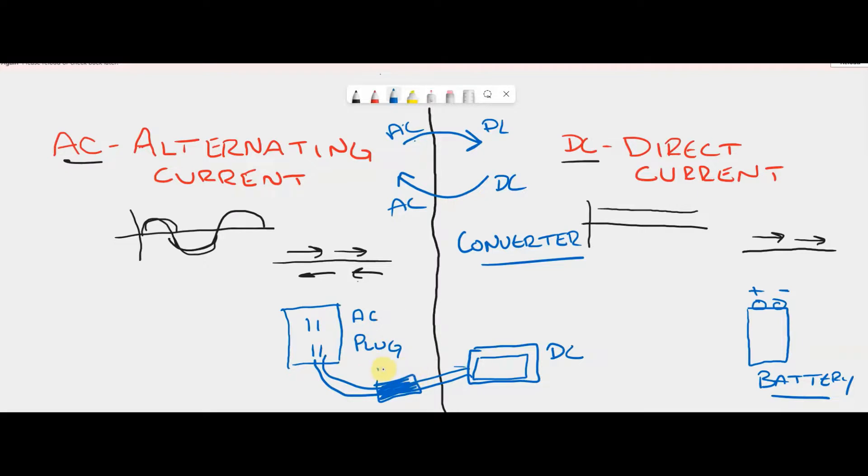This is your AC to DC converter. It takes the alternating current from the plug, converts it to direct current, and then operates your computer.